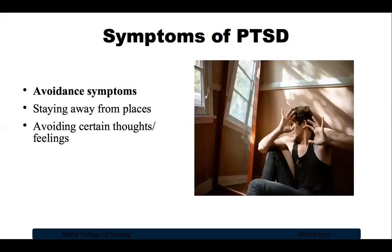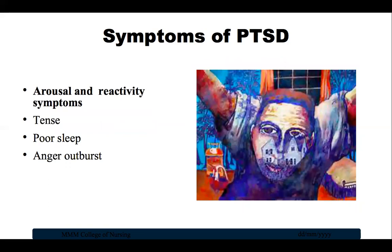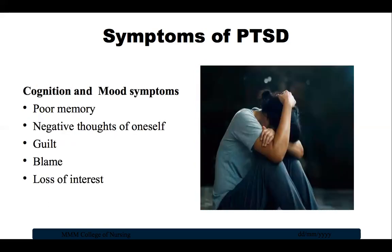Avoidance symptoms include staying away from places, events, or objects that are reminders of the traumatic experience, and avoiding certain thoughts or feelings related to the event. Arousal and reactivity symptoms include being easily startled, feeling tense or on edge, having difficulty sleeping, and having anger outbursts. Cognitive and mood symptoms include trouble remembering key features of the traumatic event, negative thoughts about oneself or the world, distorted feelings like guilt and blame, and loss of interest in enjoyable activities.